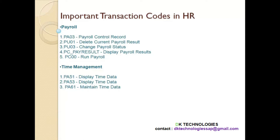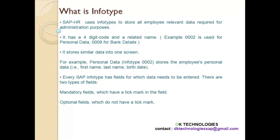So that was the transaction code — it is used to jump to a task in a single step. Now let us learn what is an info type. When a company hires an employee, the company needs information regarding personal details, bank details, address details, and many other information. So where is this information going to be stored? This information is stored in an info type — SAP has provided info types for this purpose.